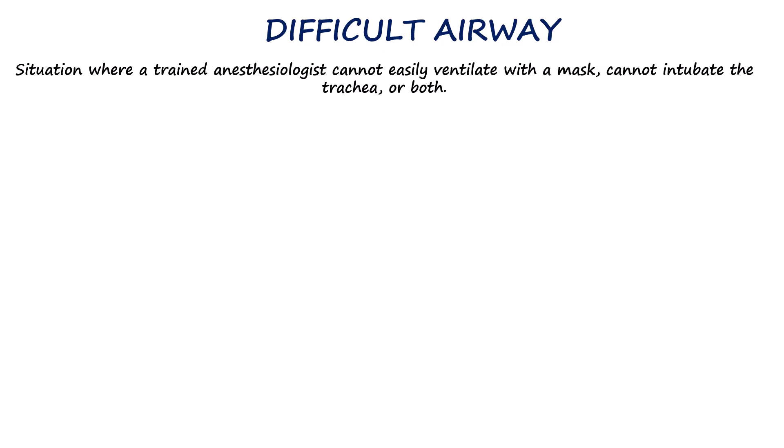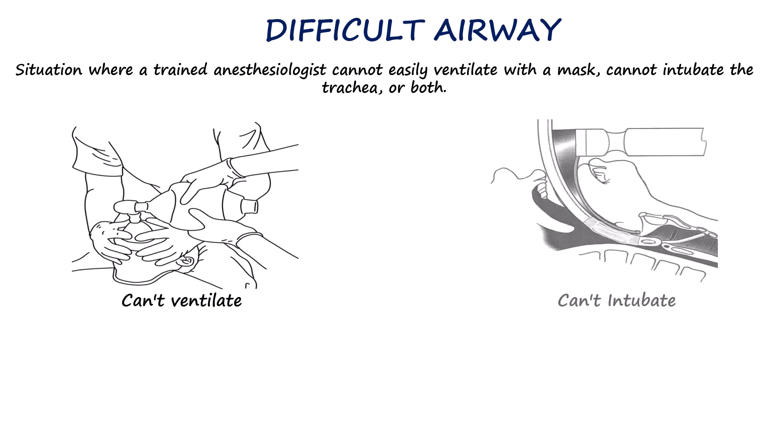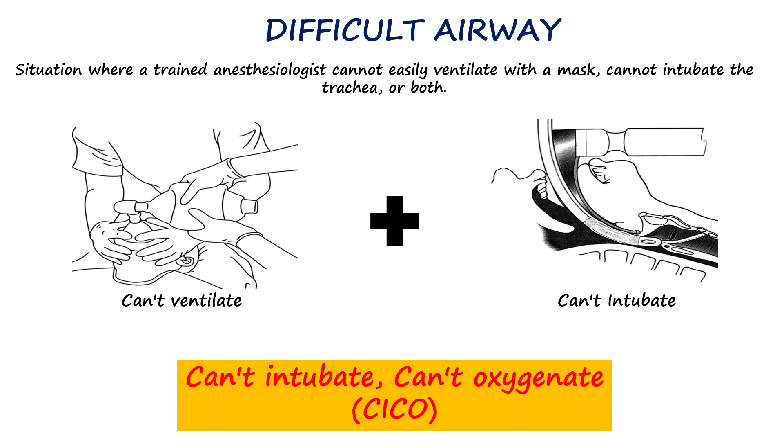Generally, a difficult airway is defined as a situation where a trained anesthesiologist cannot easily ventilate with a mask, cannot intubate the trachea, or both. We call this scenario the 'can't intubate, can't oxygenate' situation. So difficult airway is a broader term used to describe the wider set of airway issues where we might not be able to ventilate or oxygenate the patient.